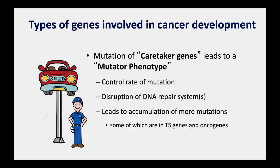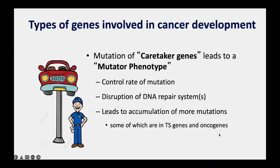In addition to having a gas pedal and brakes, we also need to make sure our car is running smoothly. If there's a little oil leak, it might not be a big thing initially, but if you don't fix it, it becomes a big problem. There's another type of gene involved in DNA repair—called caretaker genes, like the mechanic—making sure everything is okay with the genome, because little problems can turn into big problems. When these genes are mutated, it results in what we call the mutator phenotype, where DNA repair systems are not working, unrepaired DNA damage accumulates, and more mutations result—some in tumor suppressor genes and oncogenes that allow cells to proliferate when they shouldn't.